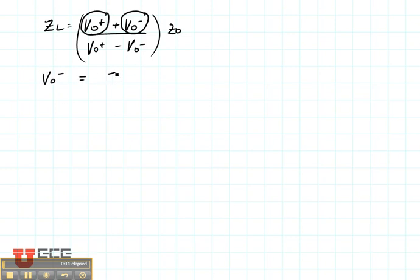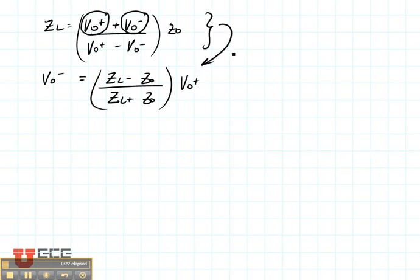What we'll find is ZL minus Z naught over ZL plus Z naught times V0 plus. Just take this equation and solve for V0 minus. That's what you'll get.